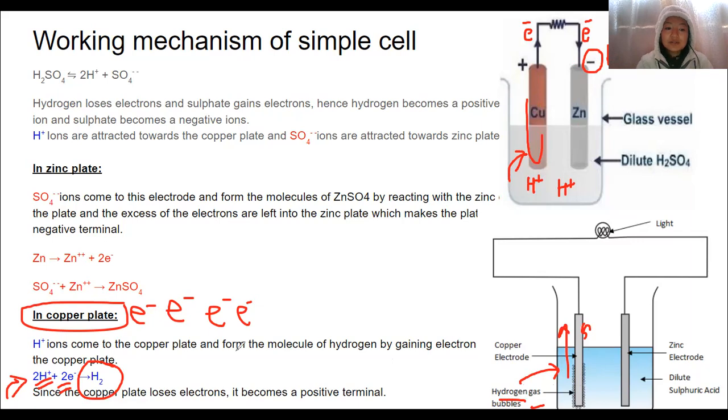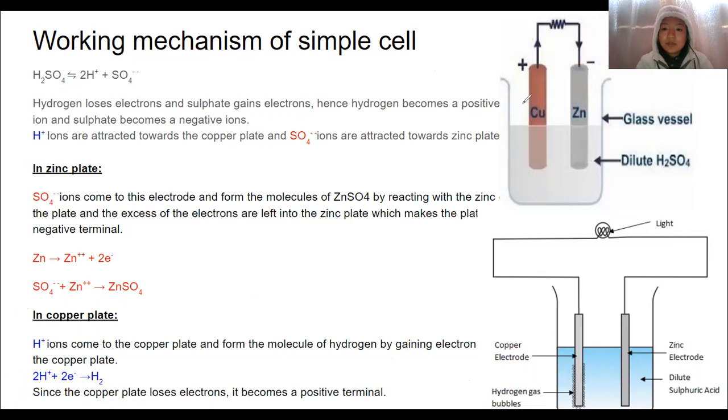So, the reason why hydrogen ions, positive ions are attracted to this plate here, copper plate here, is because of the availability of electrons. Now, let us come to zinc plate. I have already mentioned that zinc is more electropositive than copper, which means zinc loses electron. The valency of zinc is two. Zinc metal loses its two valence electrons.